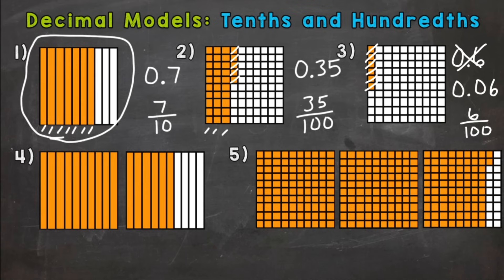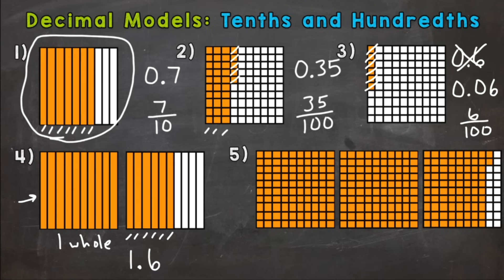Numbers four and five are going to involve whole numbers. For number four, we have one full square filled in, so that represents one whole. Then our second square doesn't have the full square filled in, so that's where our decimal or fraction comes into play. This is going to be tenths. Let's see how many tenths we have filled in: one, two, three, four, five, six. So we need to write out one and six tenths. It's going to look like this: one and six tenths. Or in fractional form, one and six tenths.